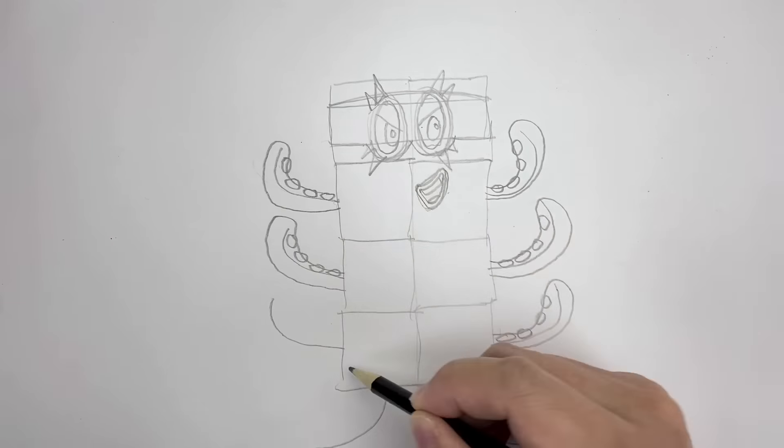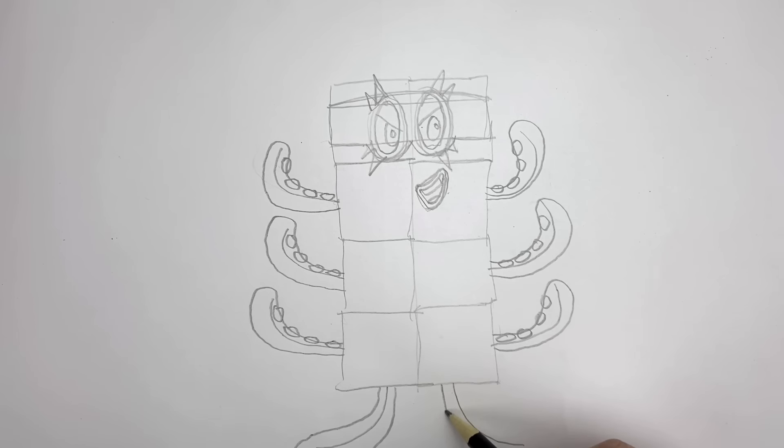Now let's draw his legs. They're very similar to his arms, but make the bottoms flatter so they look like they're standing on the ground. The suction cups should face downwards. Now that we've drawn his general shape, we can finalize the lines. Make sure to slightly curve the corners of the blocks.